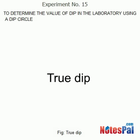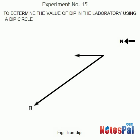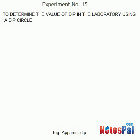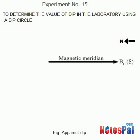Setting the dip circle in the magnetic meridian, that is, the north-south position, in this case it measures the true dip. Without setting the dip circle in the magnetic meridian, in this case it measures the apparent dip.